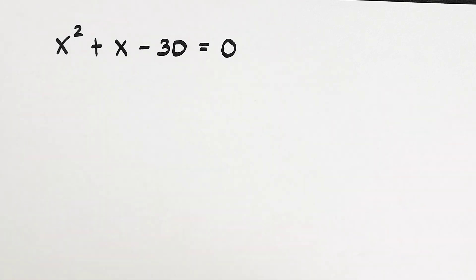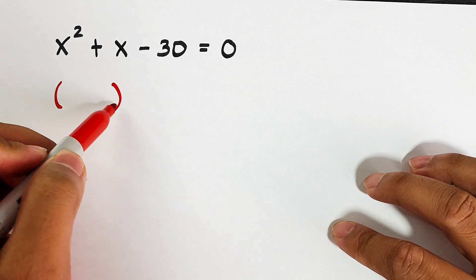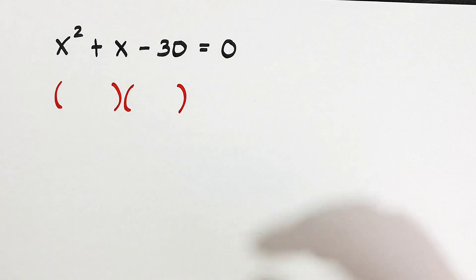So how do we factor? First, we will prepare set of parentheses. So we will prepare two sets of parentheses. Now, how are we going to factor this out? To factor this out, guys, let us see first the equation.